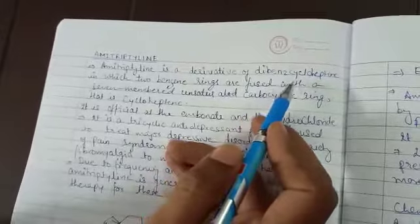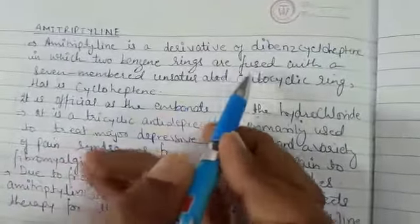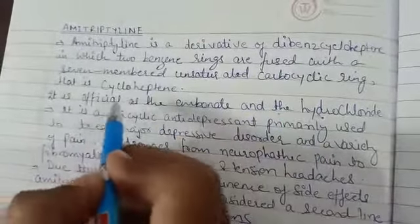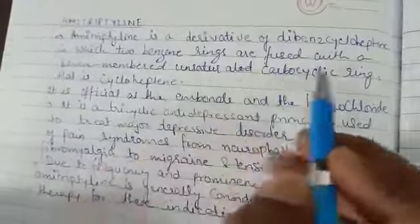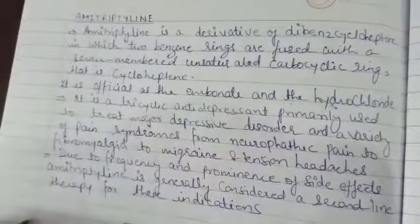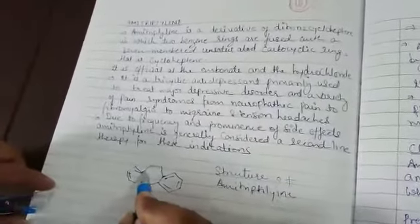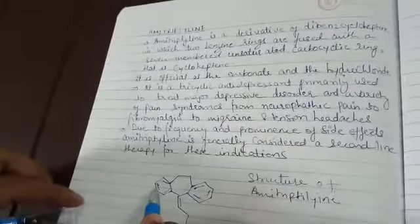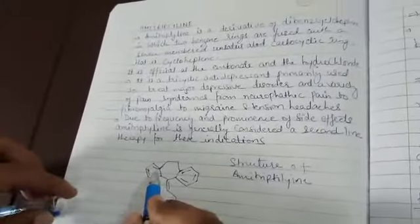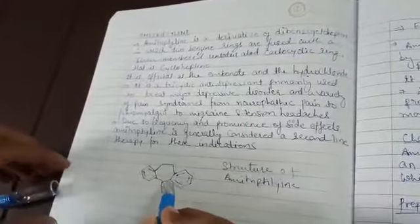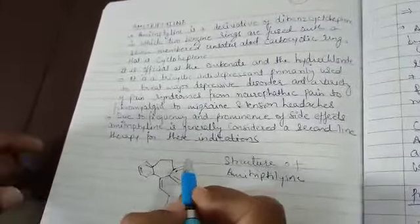In dibenzocycloheptine, two benzene rings are fused with a seven-membered unsaturated carbocyclic ring, that is cycloheptine. You can see two benzene rings fused with a seven-membered ring which is unsaturated because there is no double bond. You can see two benzene rings with a seven-membered unsaturated carbocyclic ring which is cycloheptine.